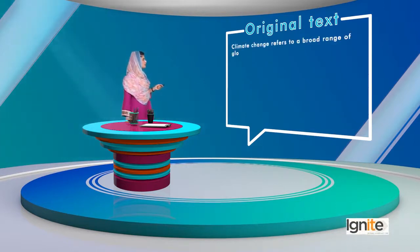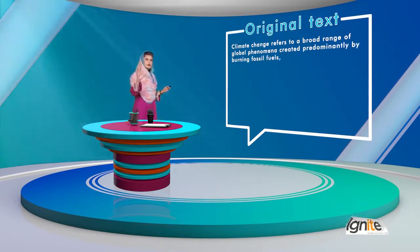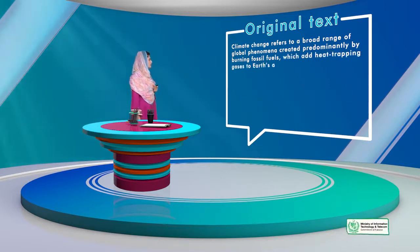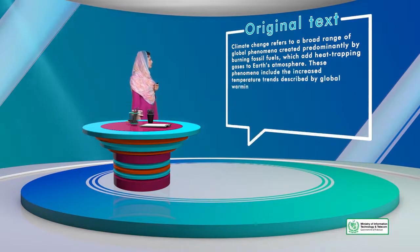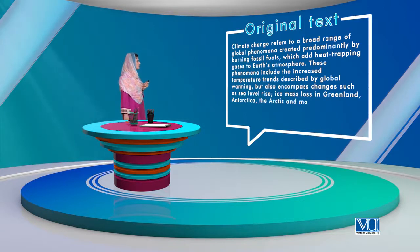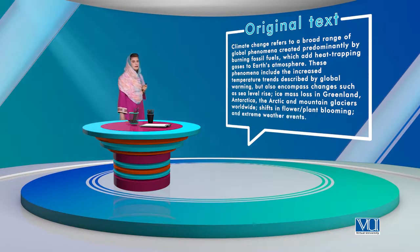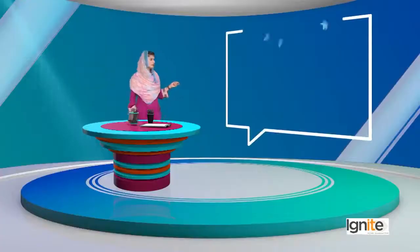'Climate change refers to a broad range of global phenomena created predominantly by burning fossil fuels.' 'Predominantly' is again a big, difficult word. 'Which add heat-trapping gases to earth's atmosphere. These phenomena include the increased temperature trends described by global warming, but also encompass changes such as sea level rise, ice mass loss in Greenland, Antarctica, the Arctic and mountain glaciers worldwide, shifts in flower and plant blooming, and extreme weather events.' Throughout, there are long sentences and technical information. Let's look at the other version — how we can unpack this, reduce and explain the information, and change the sequencing.